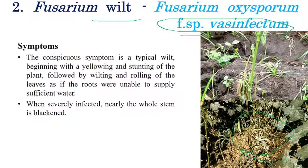Fusarium wilt mainly restricts the translocation of water from roots to shoots. If there are gas bubbles or obstacles in the water passage, the plant wilts because water cannot be transported upward. In severe cases, the whole plant dies and blackening of the stem can also be observed. The major symptoms are yellowing of leaves, wilting, and death of plants in severe stages.